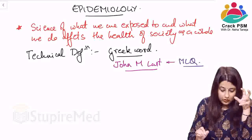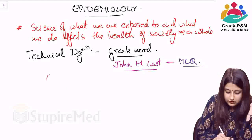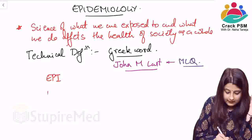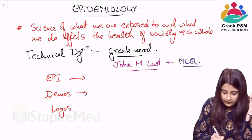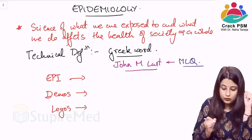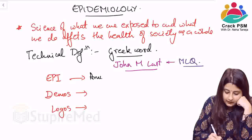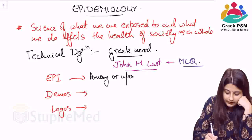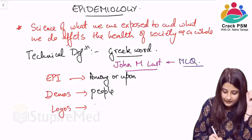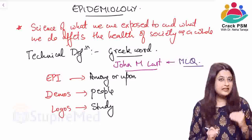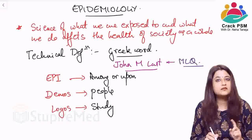The Greek word 'epidemiology' can be divided into three smaller words: epi, demos, and logos. Epi means 'among' or 'upon'. Demos means 'people'. And logos means 'study'. This is the individual breakup of the terms in epidemiology — epi means among or upon, demos means people, and logos means study.